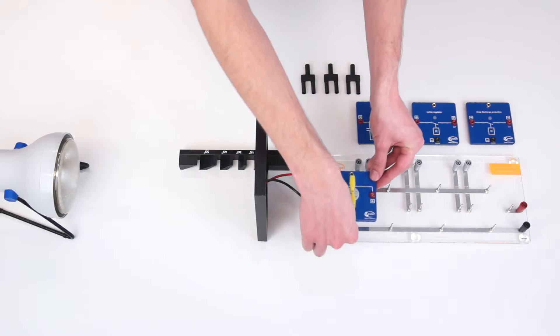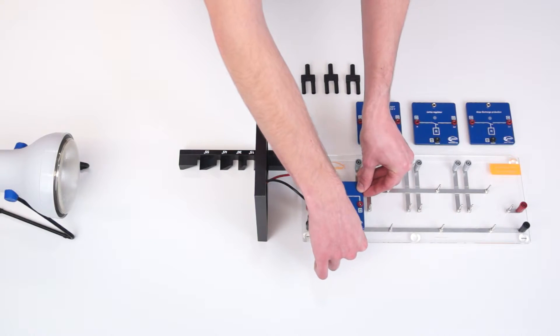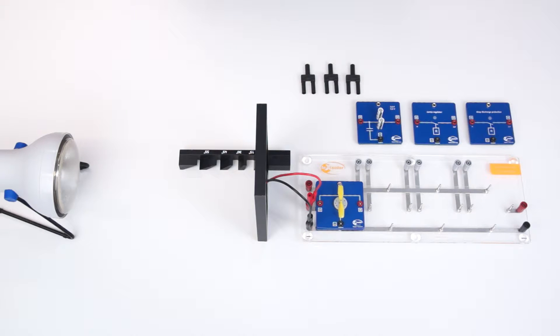For our first part of the experiment, we put the motor module on the base unit and connect it to the solar module afterwards. In this way, we now have a circuit consisting of a producer and a consumer.